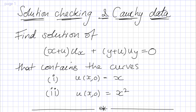I thought it would be useful to look at two aspects of solving a quasi-linear PDE: how to check your solution, and how to make use of the Cauchy data to find a particular solution. So let's imagine we're given a question like this one. This is a quasi-linear PDE because we've got u's in front of the derivatives. We're asked to find the solution that contains two given curves: u(x,0) = x and u(x,0) = x².